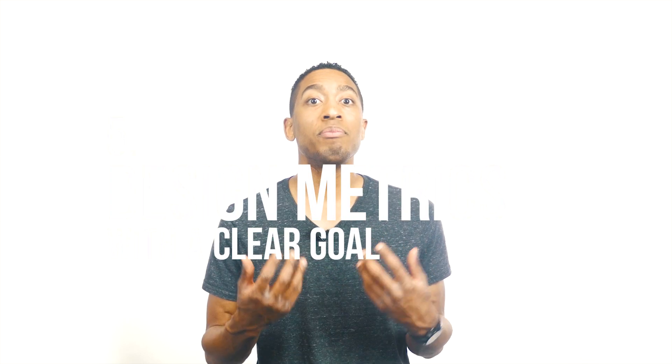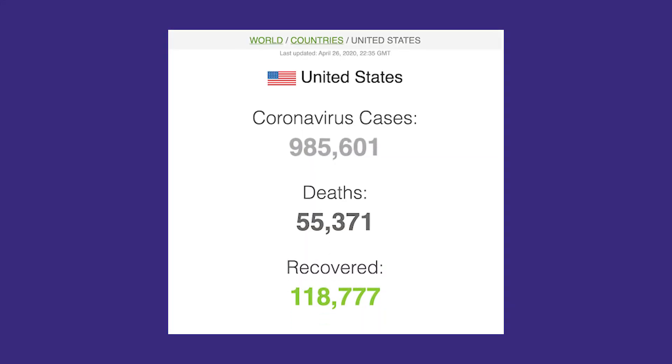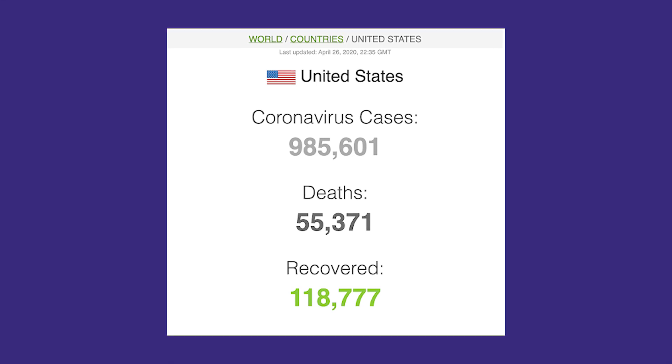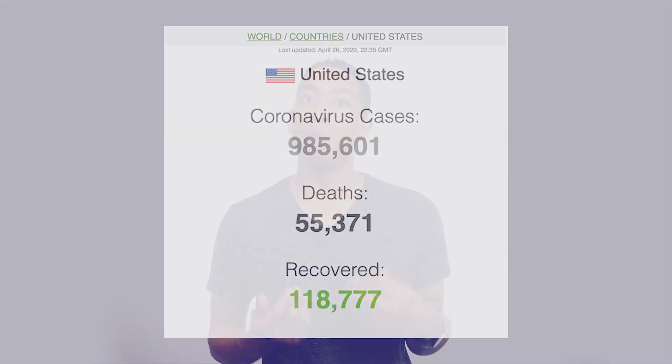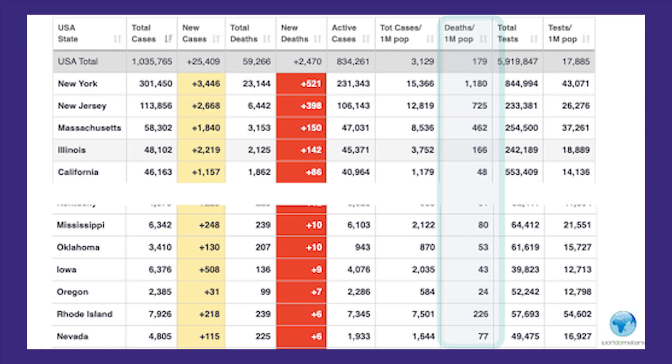Step five: design contextual metrics with a clear goal. Metrics should be designed with a clear goal in mind. For example, if your goal is to understand the severity of COVID-19 by state, high level metrics like number of cases and number of deaths don't tell us much. To make more valuable comparisons about which state is doing better or worse, we can determine that it is important to see the total deaths per million people. Looking at this chart,